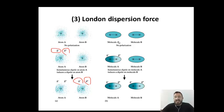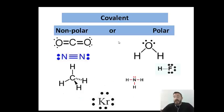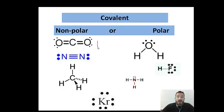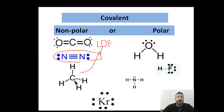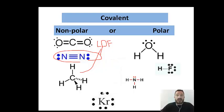Now you want to be able to look at molecules and identify the type of intermolecular force. If you had one CO₂ next to another CO₂, CO₂ is nonpolar, so it would be a London dispersion force. If you had one N₂ next to another N₂, that would also be London dispersion. CH₄ next to another CH₄ is also London dispersion because it's nonpolar. And a single atom would also be a London dispersion force because a single atom is nonpolar.